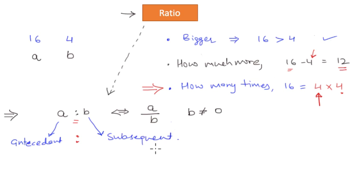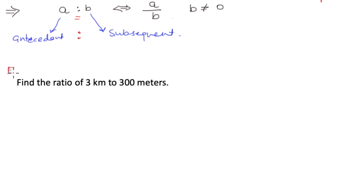My first example is: find the ratio of three kilometers to three hundred meters. My first number is three kilometers and the second number is three hundred meters. So the first thing I want to do is I want to convert these numbers into the same unit of measurement because kilometers is not the same as meters.